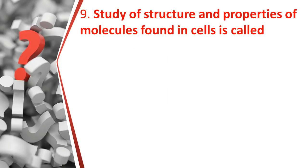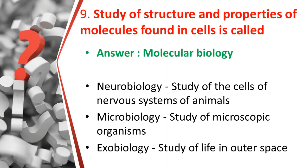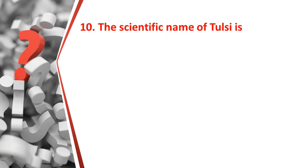The ninth question: the study of the structure and properties of molecules found in cells is called what? The answer is molecular biology. Related facts: neurobiology is the study of cells of the nervous system, microbiology is the study of microscopic organisms, and exobiology is the study of life in outer space. So the answer is molecular biology.